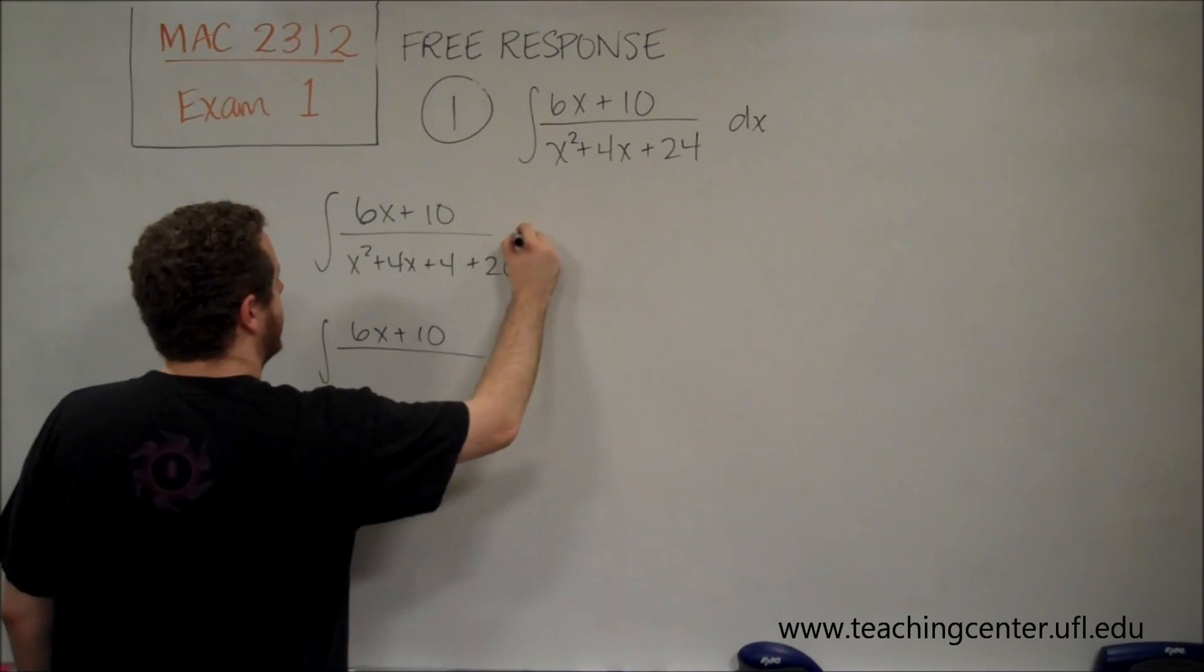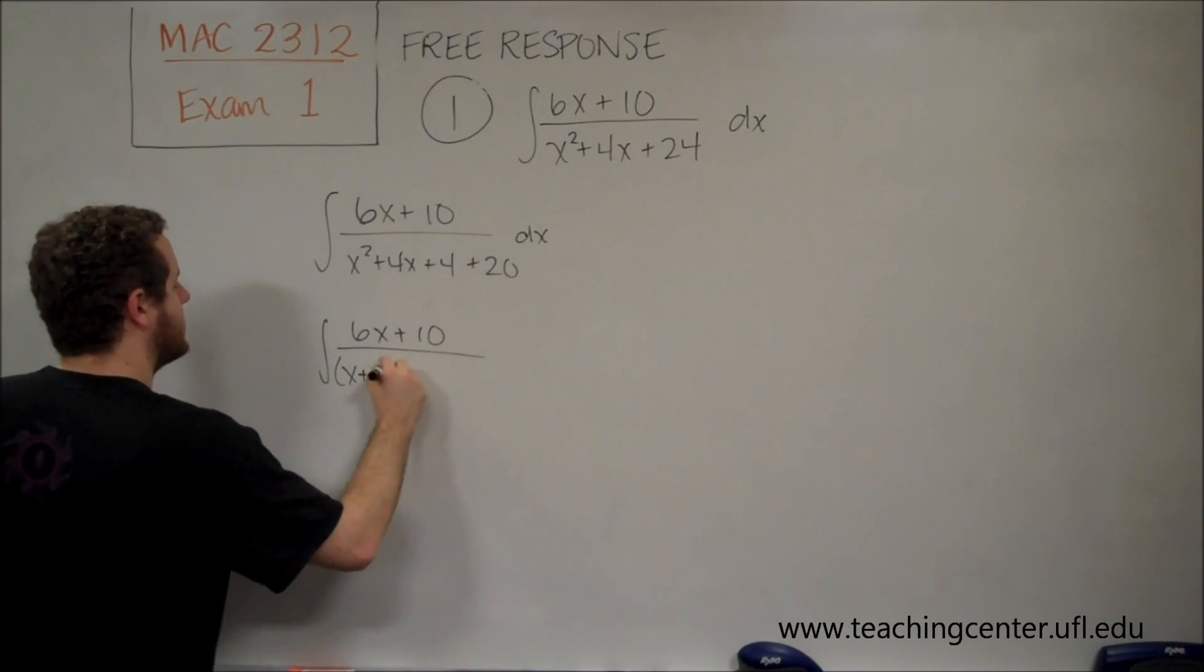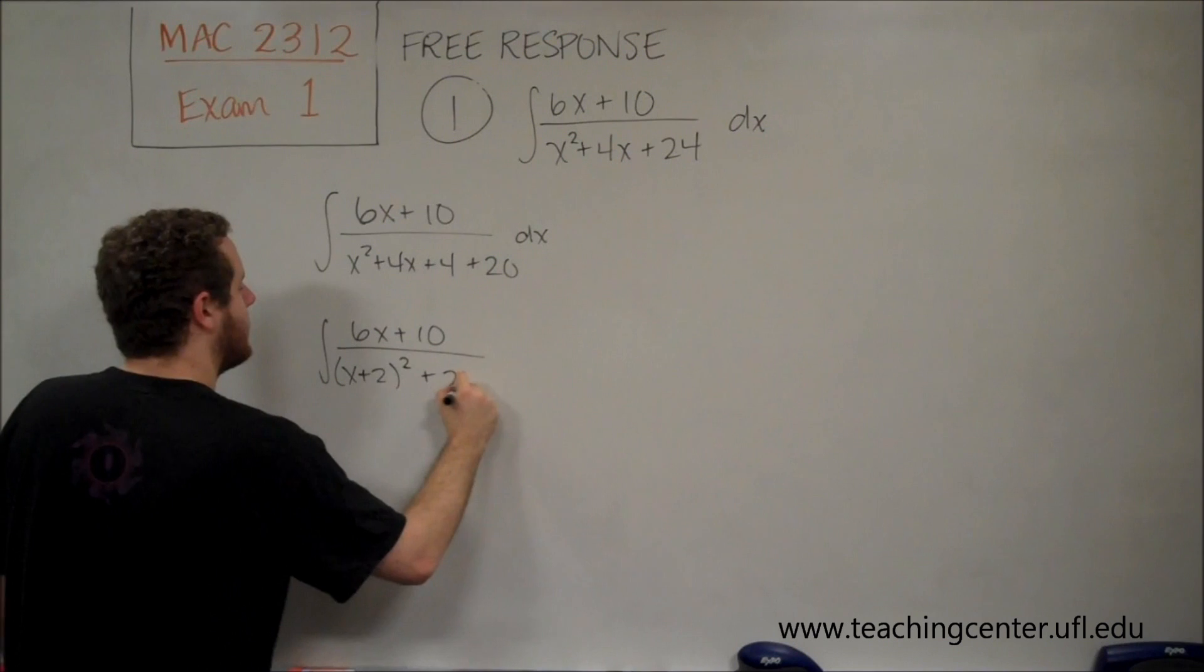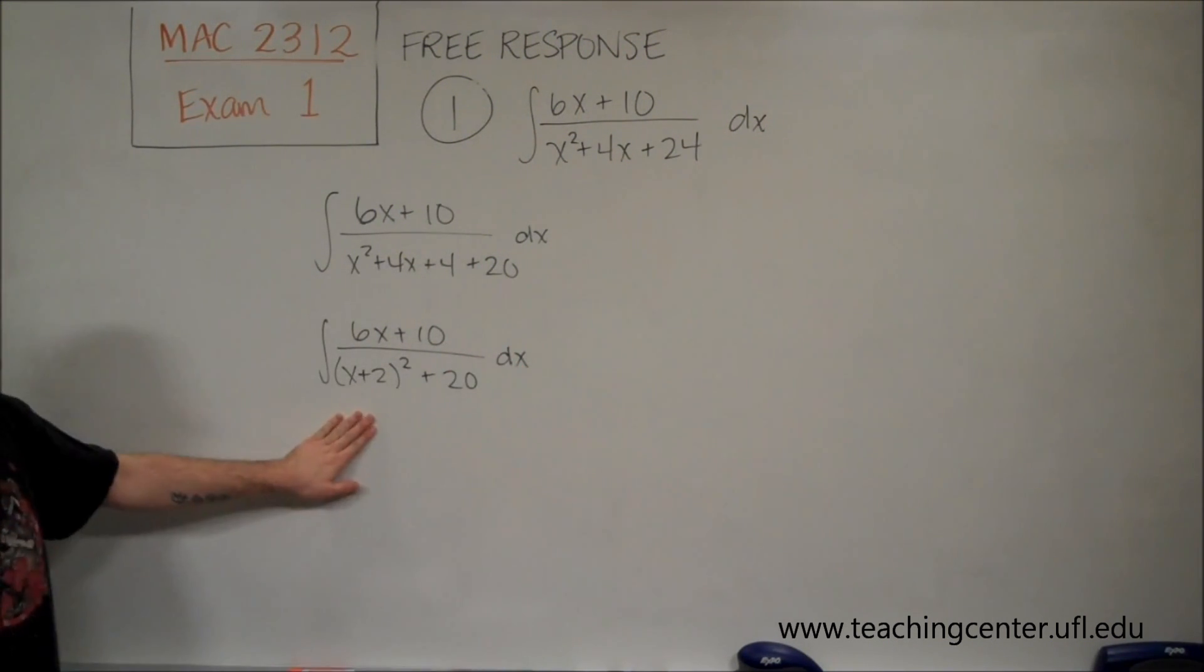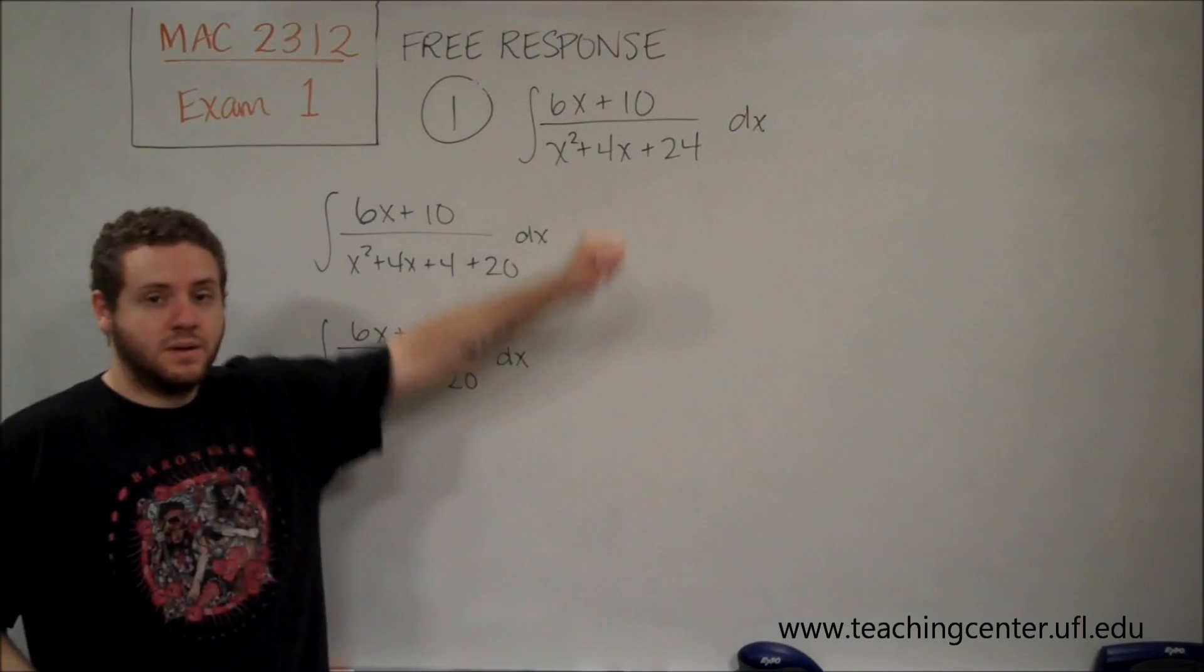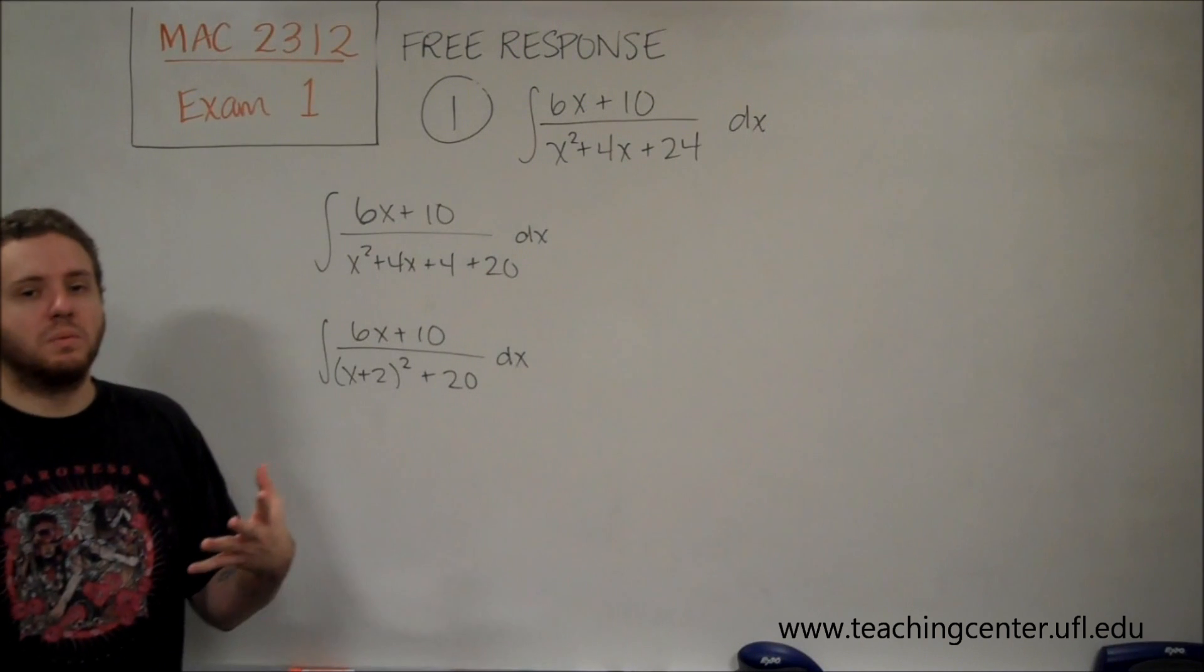So that's just splitting the 24 into 4 and 20. And then the first part of that can be factored into, that's x plus 2 quantity squared. So this is a little bit easier to work with than this. Because now we can see some things are going to happen here that are what we want.